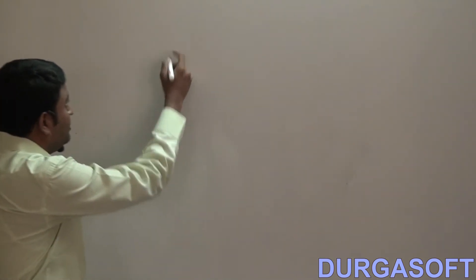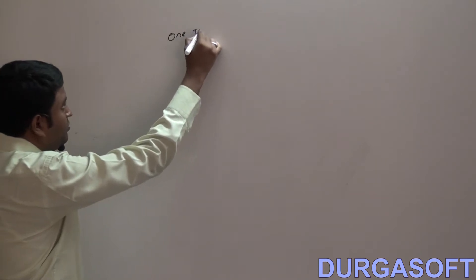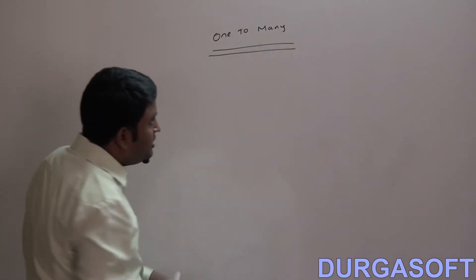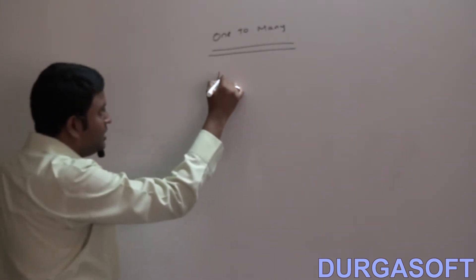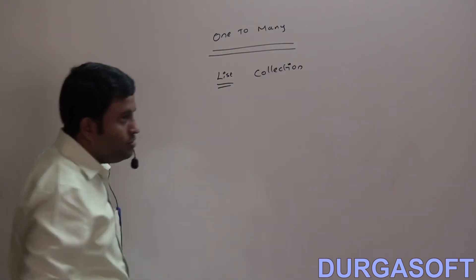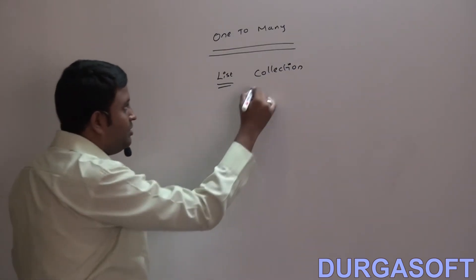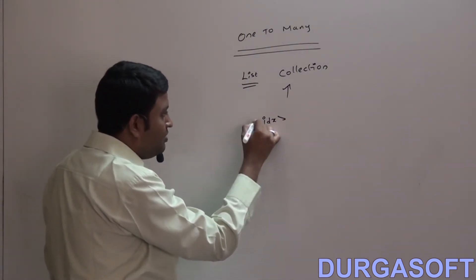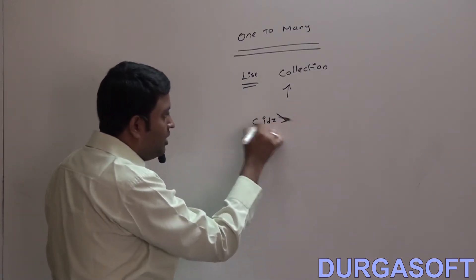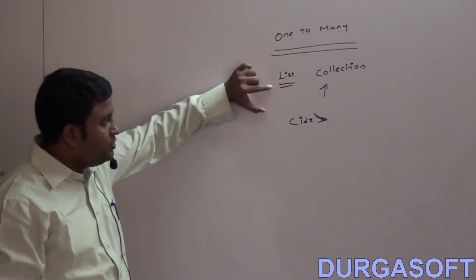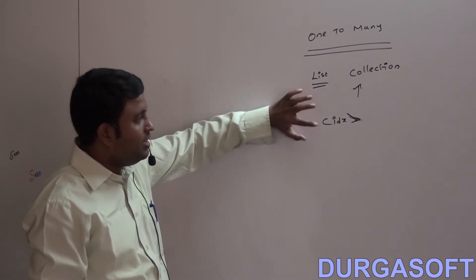In the previous application, we mapped one-to-many relationships by using a list collection. To maintain insertion order with a list, we used one special column in the back-end child table called the index column. This index column maintains insertion order, but we need to create one additional column in the child class for this purpose.